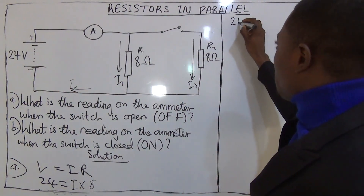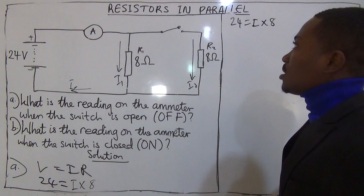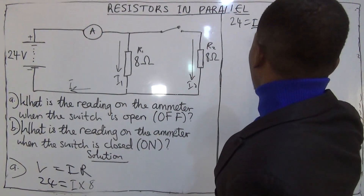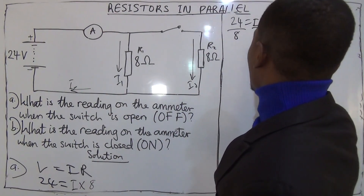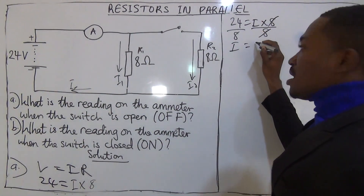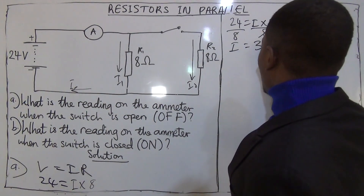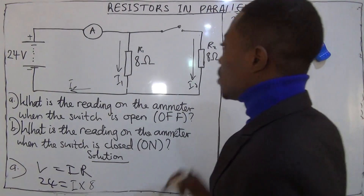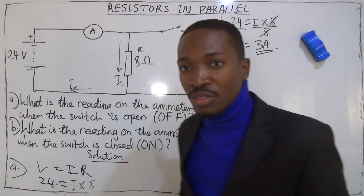If 24 is equal to I multiplied by 8, to find I we divide both sides by 8. So we have I equals 24 divided by 8, which gives us 3 amperes. That is the current flowing in the circuit.